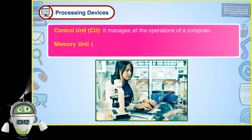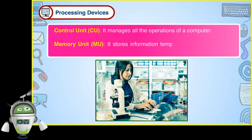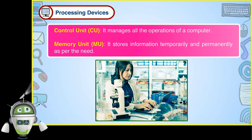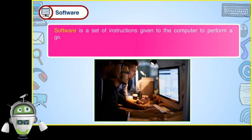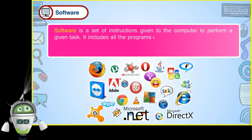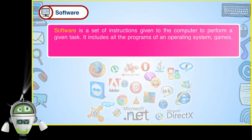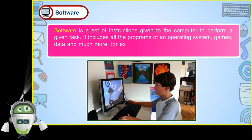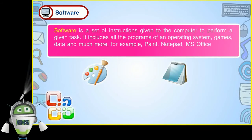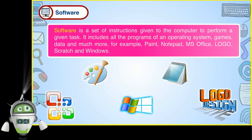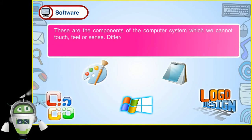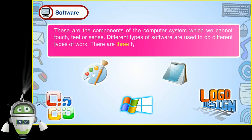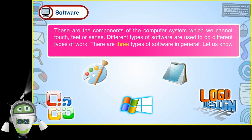Software: Software is a set of instructions given to the computer to perform a given task. It includes all the programs of an operating system, games, data and much more. For example, Paint, NotePad, MS Office, Logo, Scratch and Windows. These are the components of the computer system which we cannot touch, feel or sense. Different types of software are used to do different types of work. There are three types of software in general. Let us know about them.